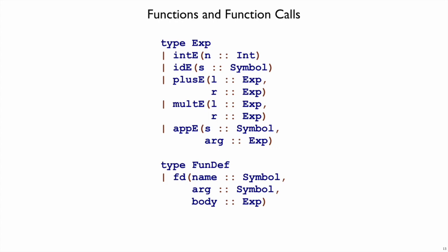We can put that into a shplate type declaration like this. We've got exp, we've added the IDE here, and app e here into that type, and then we have separately fundef, which has just one way to define a function with fd, with the function name, its argument's name, and the body expression.